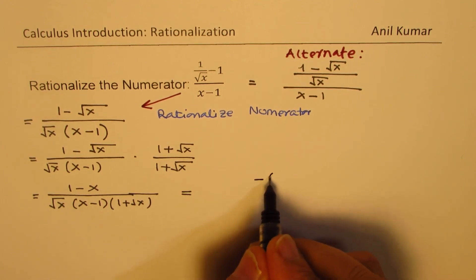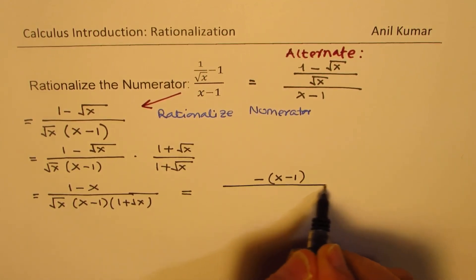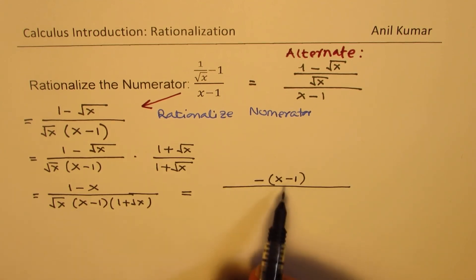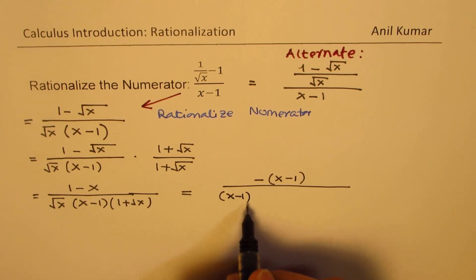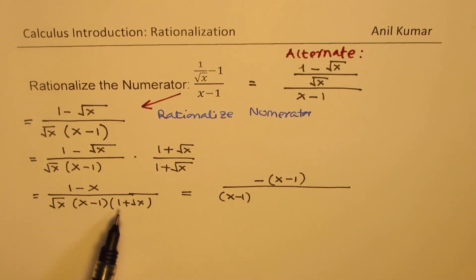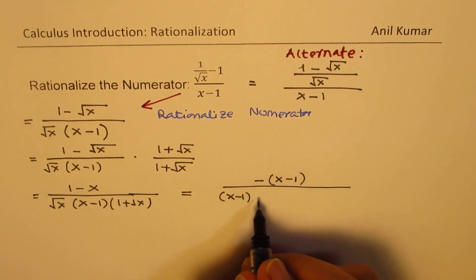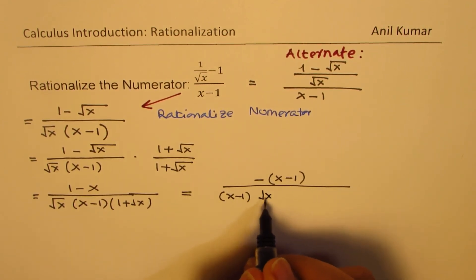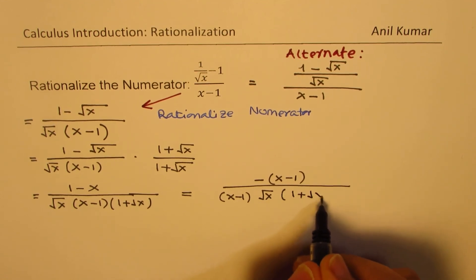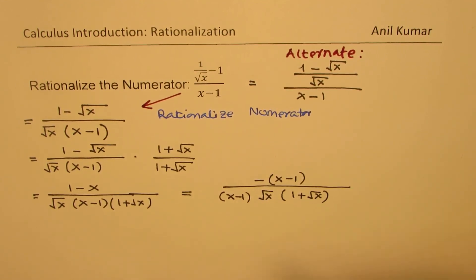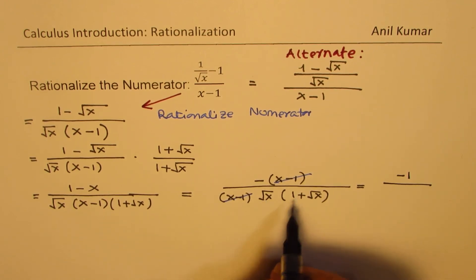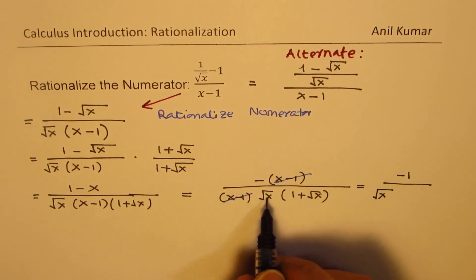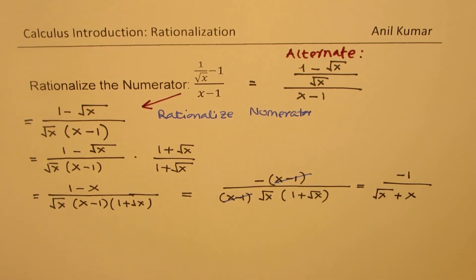Now, since we'll have the same strategy, we have 1 minus x in the numerator. We'll write this as minus of x minus 1. We have x minus 1 in the denominator. Now, we have this x minus 1, we can cancel this. And this square root of x will get multiplied with the inside function. We have square root of x. Let me rearrange and write it: 1 plus square root of x. Now, as we did earlier, we are going to cancel this. And we get minus 1 on the top. The denominator will be square root of x, and square root times square root gives us x. And that becomes our answer.